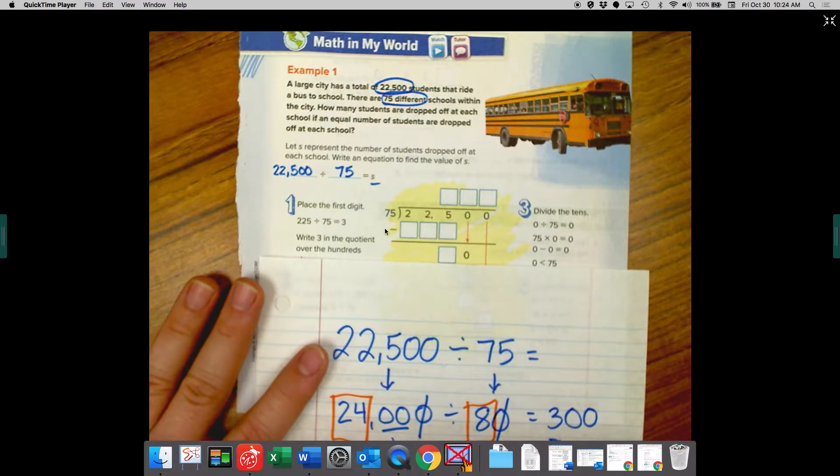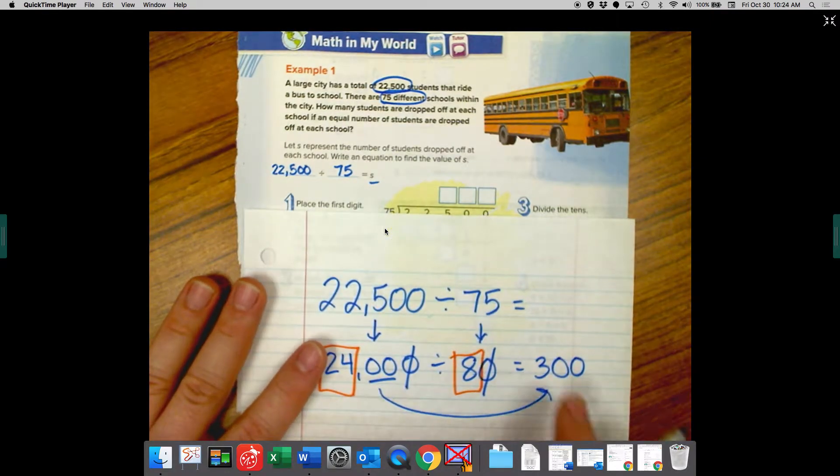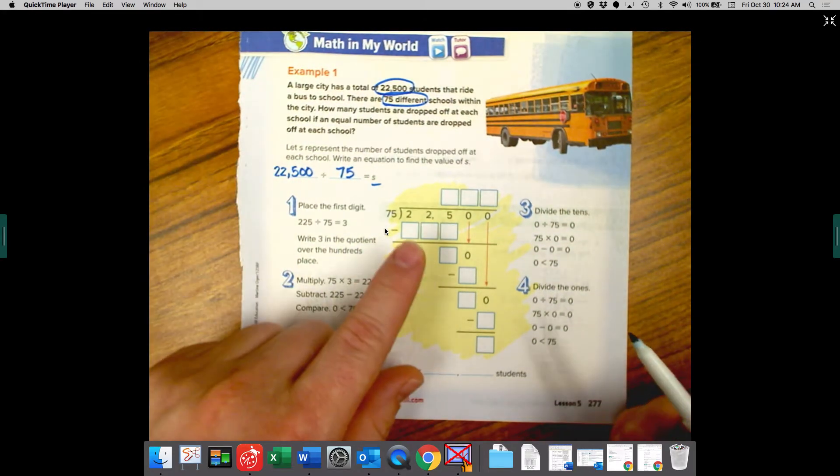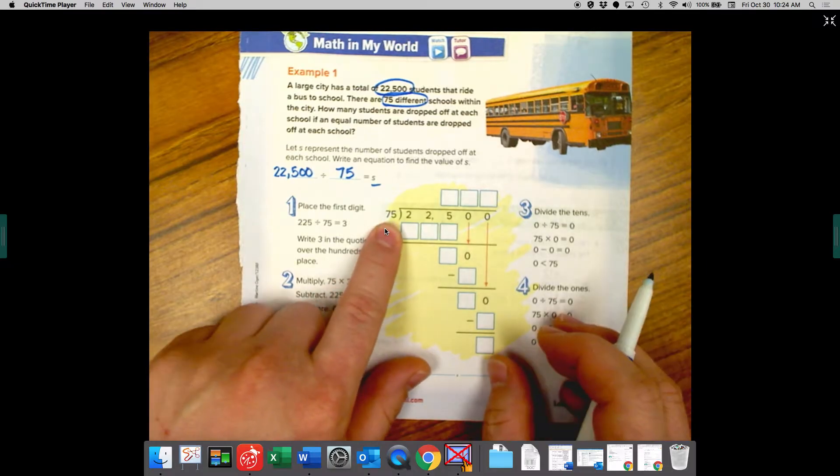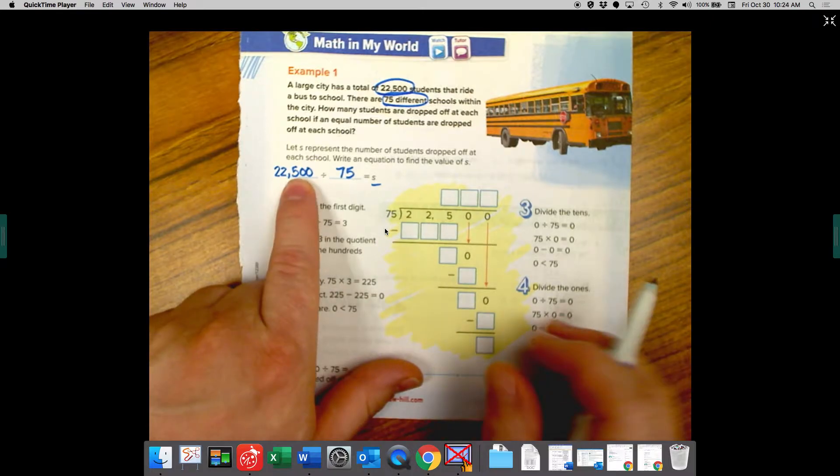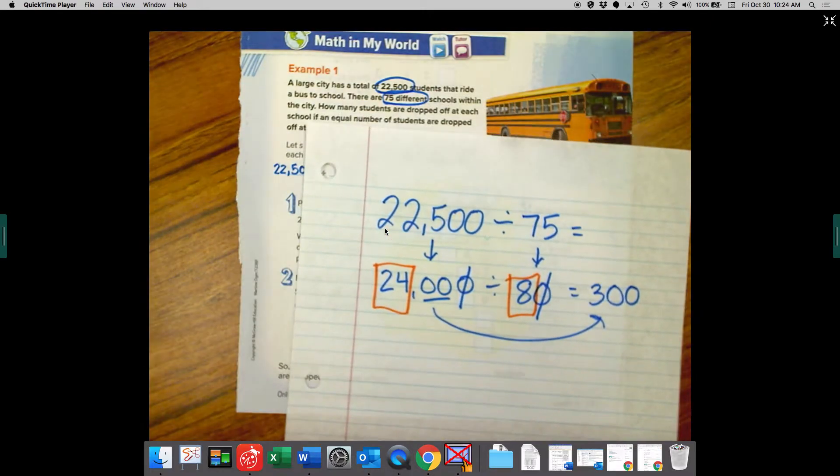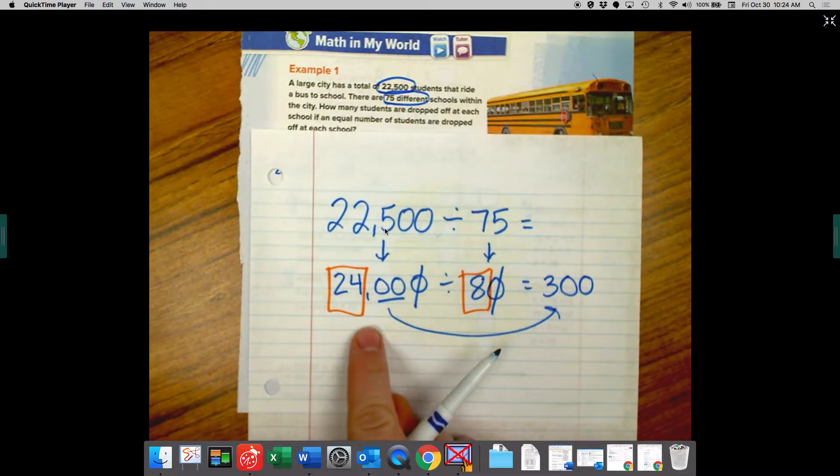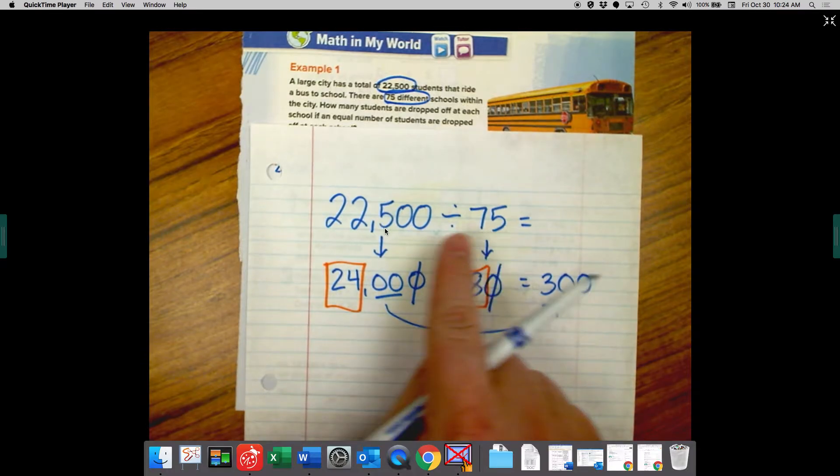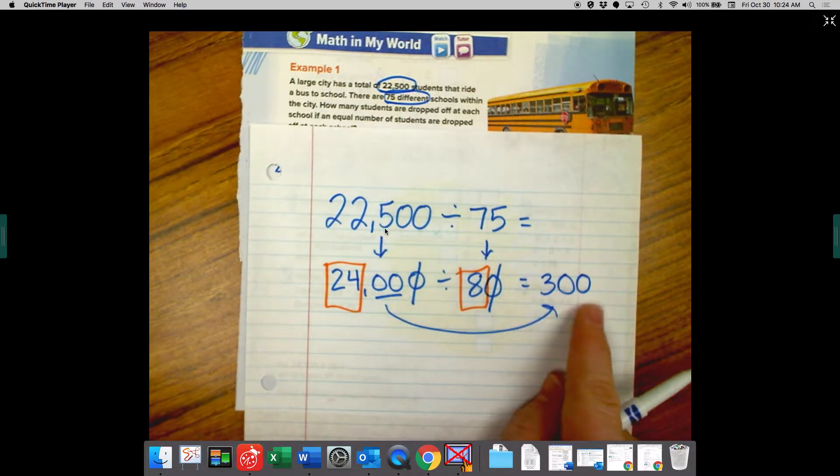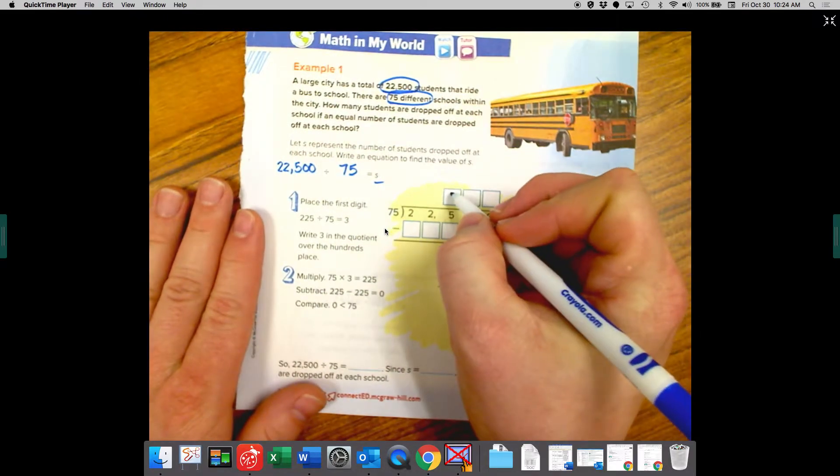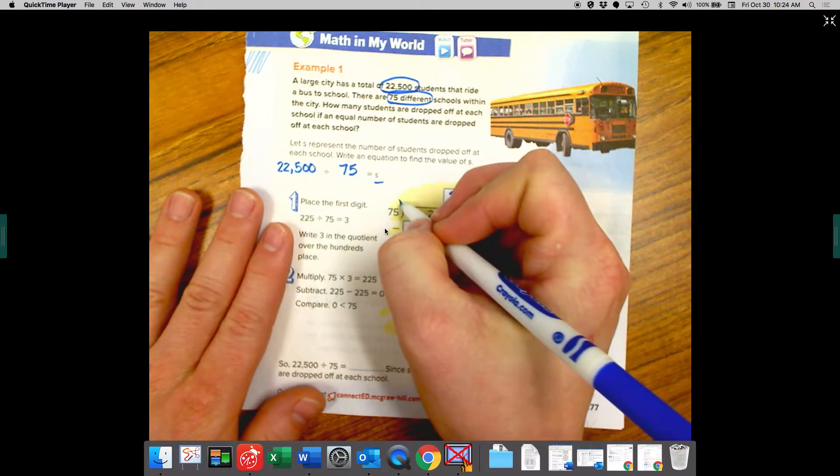So when I'm doing this problem in my workbook, I'm going to think it should be right around 300. So let's see if that's true. So we estimated 80 to 24,000. We said about 300. So we're going to say that 75 goes into this number about 300 times. So we're going to start with the number 3 as our first choice. So let's put 3 here. We can put our little snowflake.